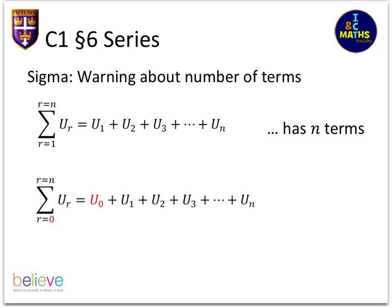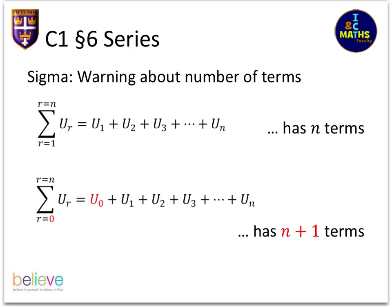If you look at the next one, it starts from zero and still goes up to n. This is where the danger is—that number at the top is not the number of terms. There's an extra one here. When it starts at zero, it has n+1 terms. Just take care with that.